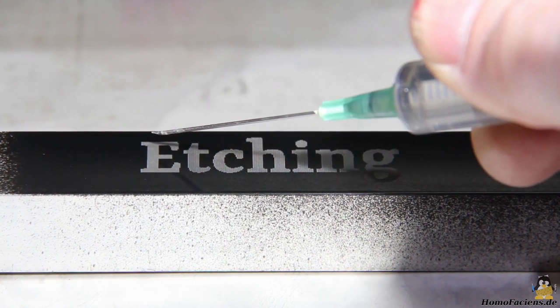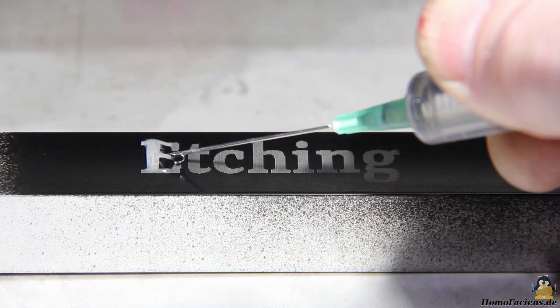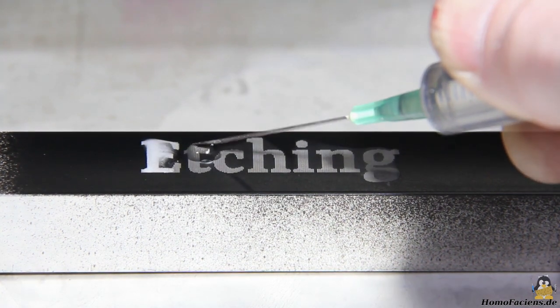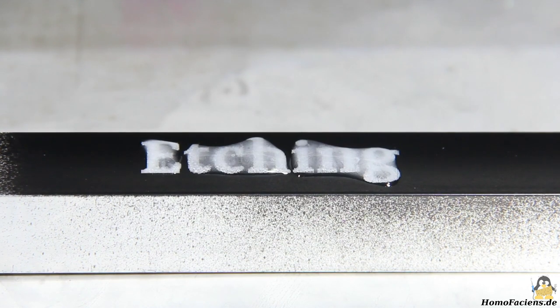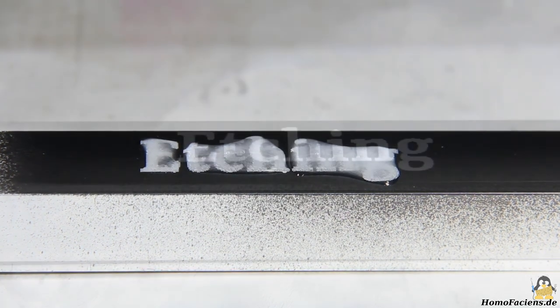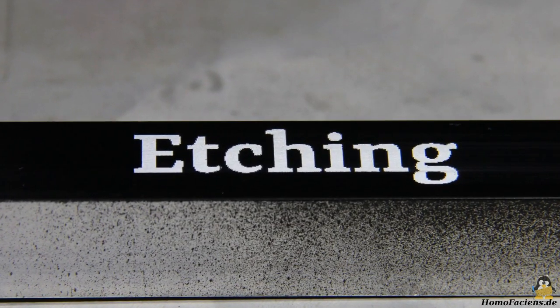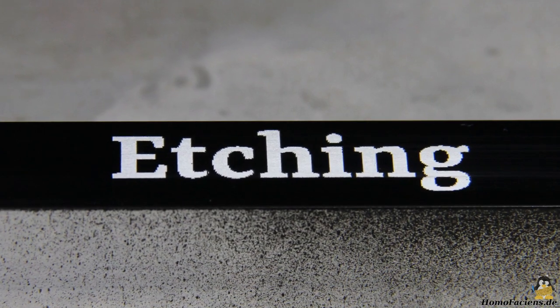Caustic soda is now applied to the surface, which dissolves the aluminum. After a few minutes of reaction time and after washing off the lye, the etched areas are clearly visible. Looks nice.